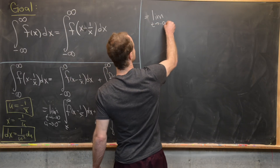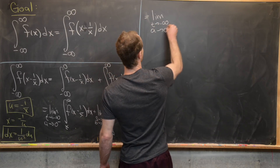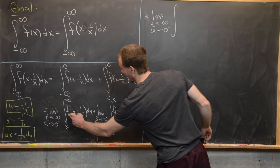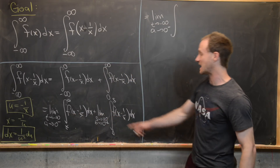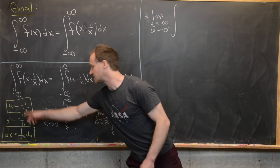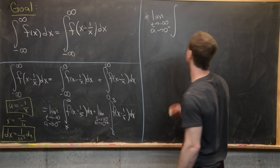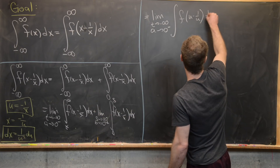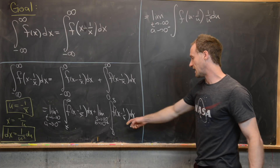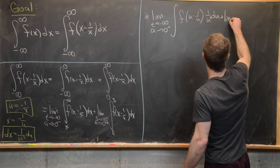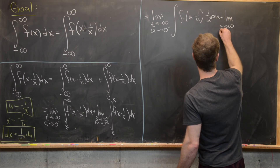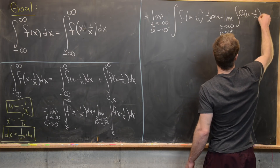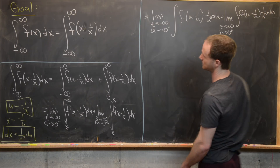So the first integral becomes the limit as t goes to minus infinity and a goes to zero from the left. Notice that f(x - 1/x) becomes f(u - 1/u), since the substitution has a nice symmetric flavor. And dx becomes 1/u² du. Then we've got plus the limit as s goes to positive infinity and b goes to zero from above, with the same integrand f(u - 1/u) · 1/u² du.